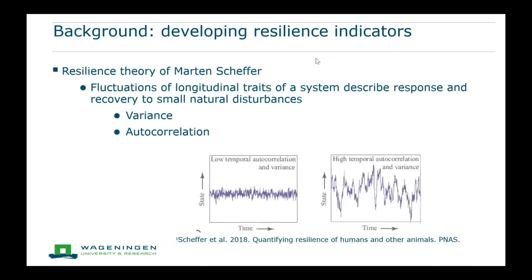These indicators were derived from a theory from Martin Scheffer, an ecologist from our university. He says that fluctuations of longitudinal traits of the system describe the response and recovery to small natural disturbances, because these longitudinal traits are sensitive to disturbances. Specifically, you can quantify these fluctuations by calculating the variance or the autocorrelation. The variance tells you something about how much the trait deviates from the baseline, and more resilient animals are expected to deviate less from the baseline and therefore have a lower variance.